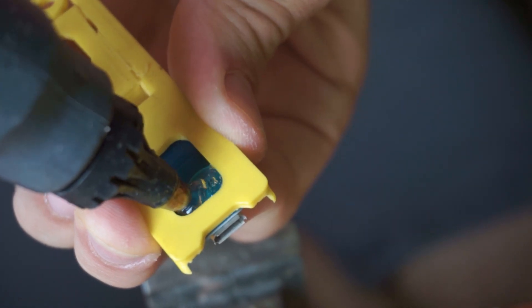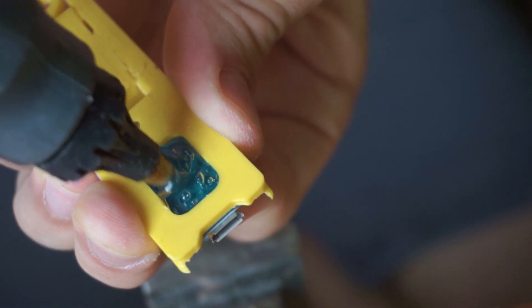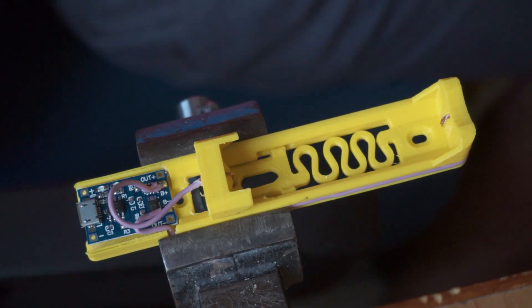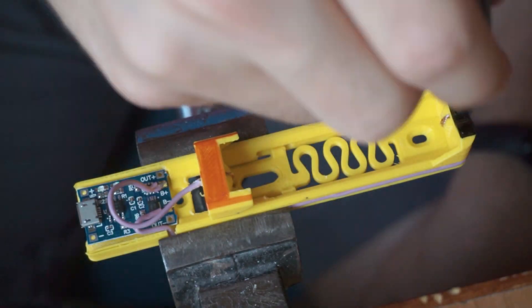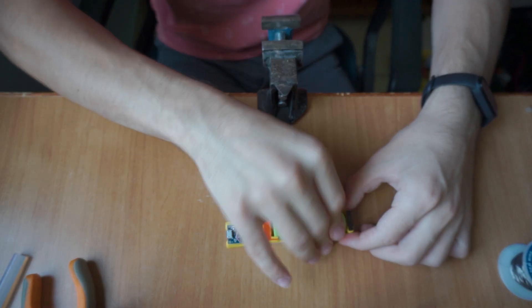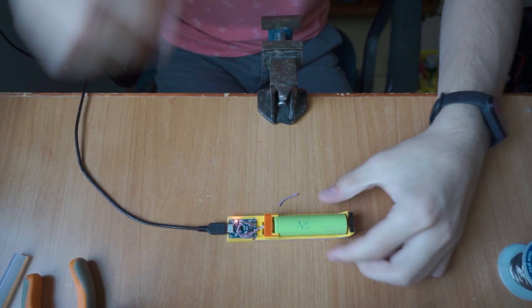Now just glue the module in place and start your first charge, completing the creation of a great tool that allows you to individually charge 18650 cells without arranging mysterious tools to do the same job.